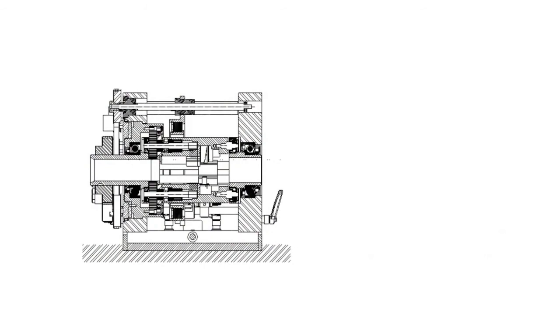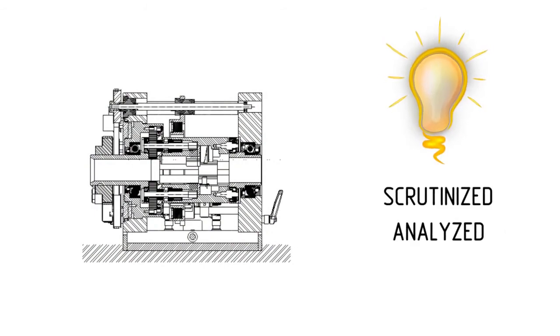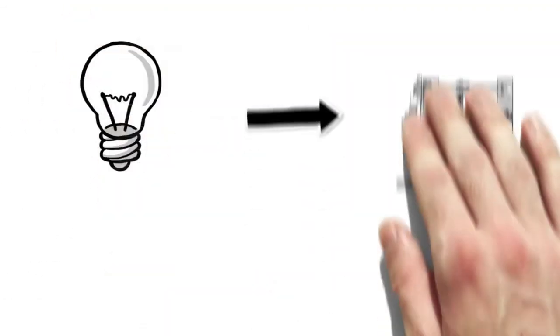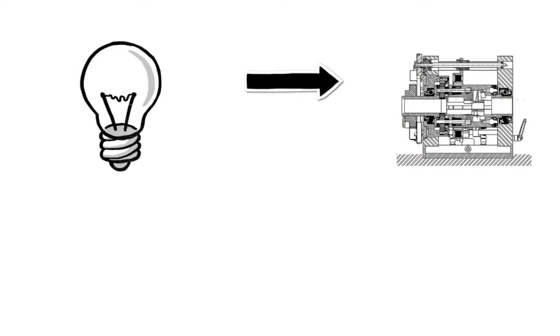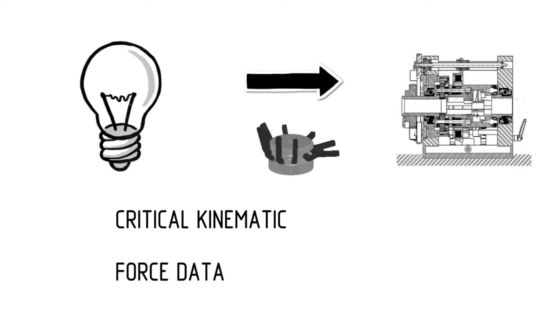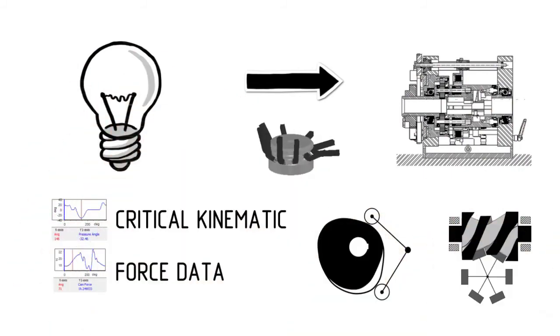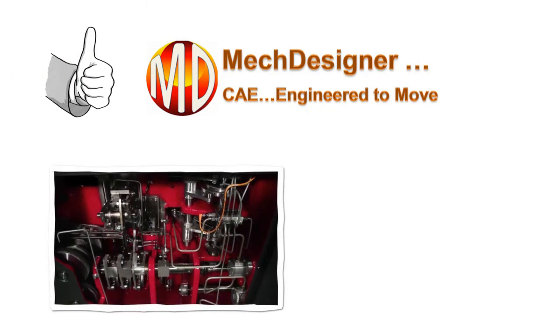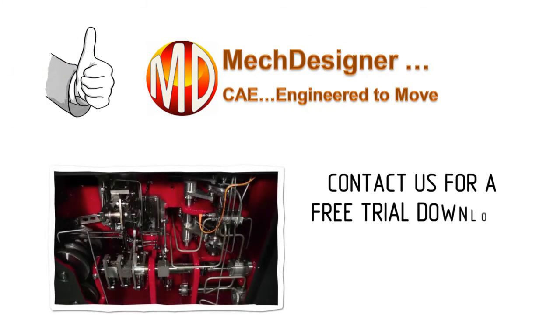The design of a machine and all its moving parts starts with an idea. But before ideas are produced, they need to be scrutinized, analyzed, and optimized. Mech Designer allows your design to come to life and make changes on the fly. Moving parts are simulated with instant feedback. Critical kinematic and force data are available for all the mechanisms, including planar and spatial cams. Don't spend unnecessary time on a design that won't work. See how Mech Designer can improve your machine performance now. Contact us for a free trial download.